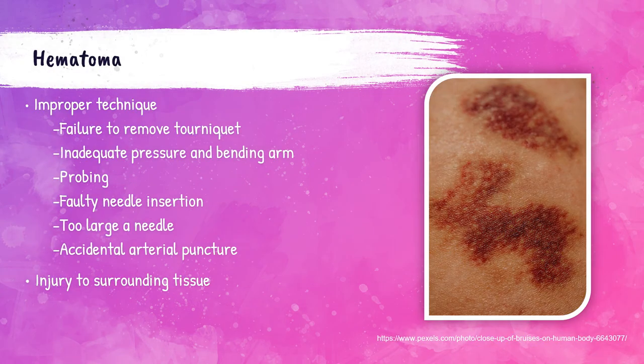A hematoma is a bad bruise caused from blood collecting and pooling under the skin. A hematoma can form due to keeping the tourniquet on too long, if the patient bends their arm instead of holding pressure after collection, if the phlebotomist is probing around for a vein, using too large of a needle, or from an arterial puncture — meaning the phlebotomist hits the artery instead of the vein. Older patients are prone to bruising even when the phlebotomy is performed properly.